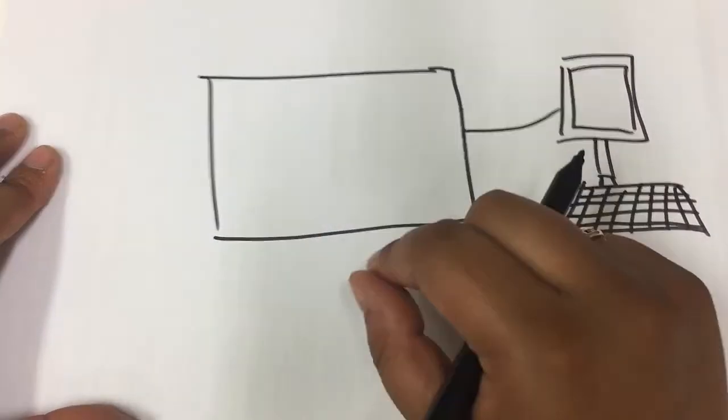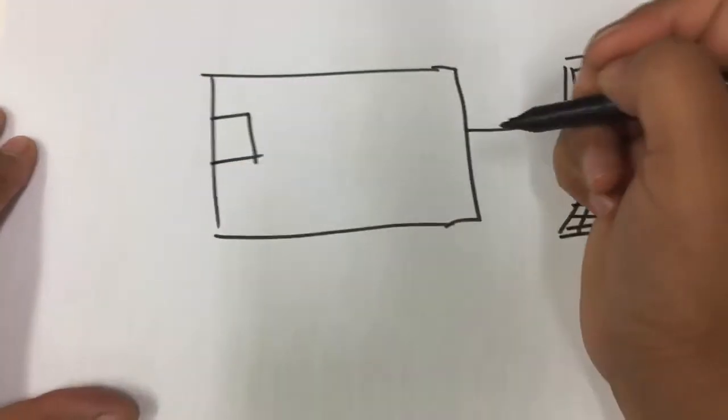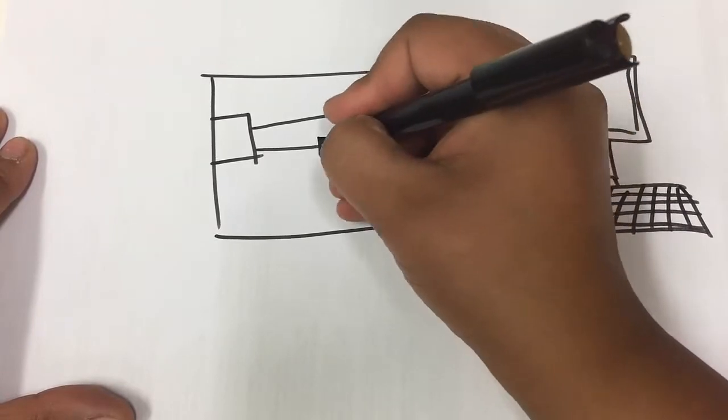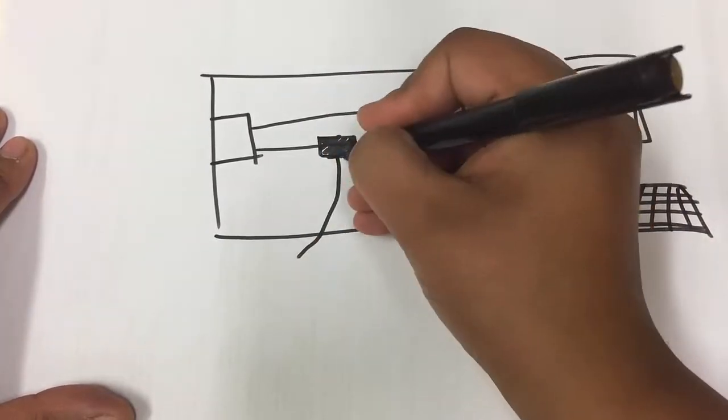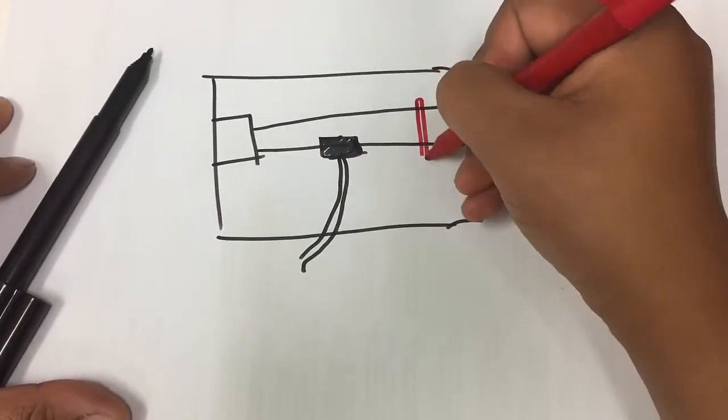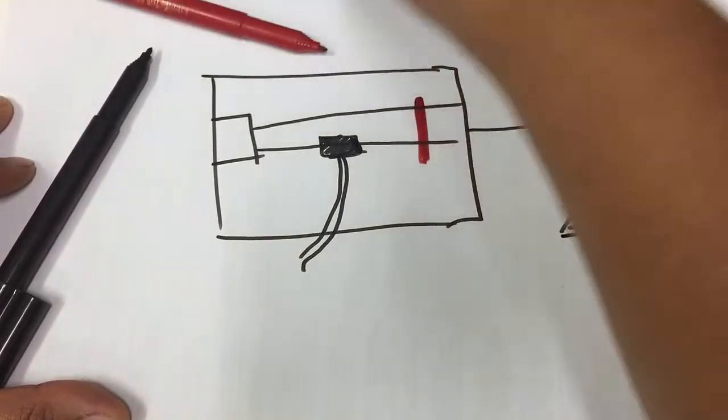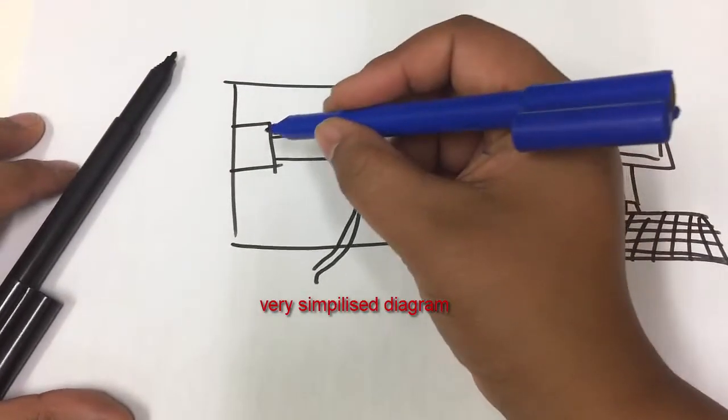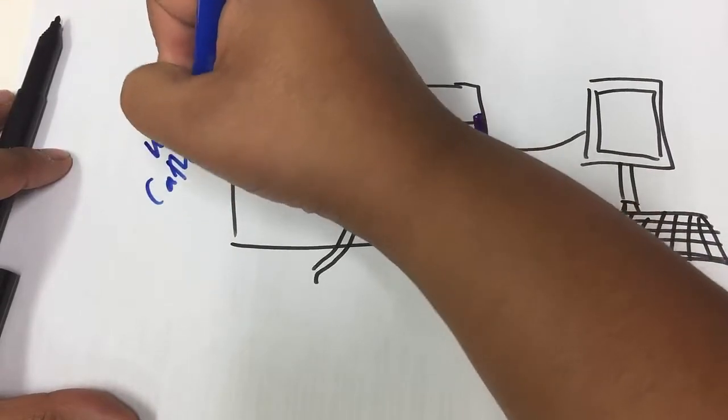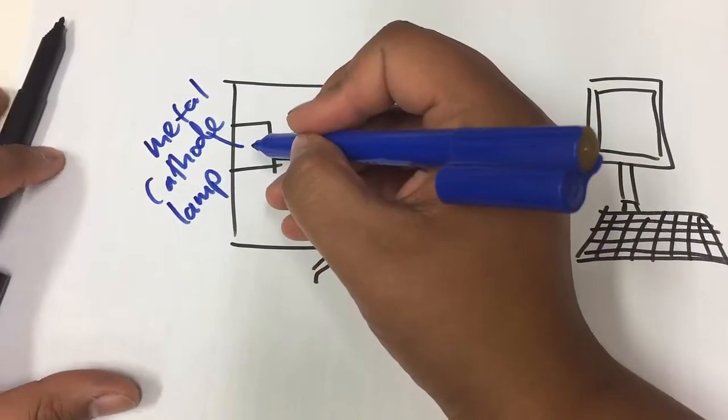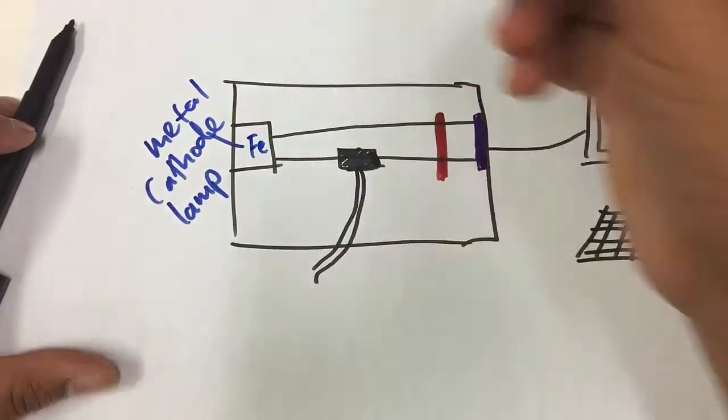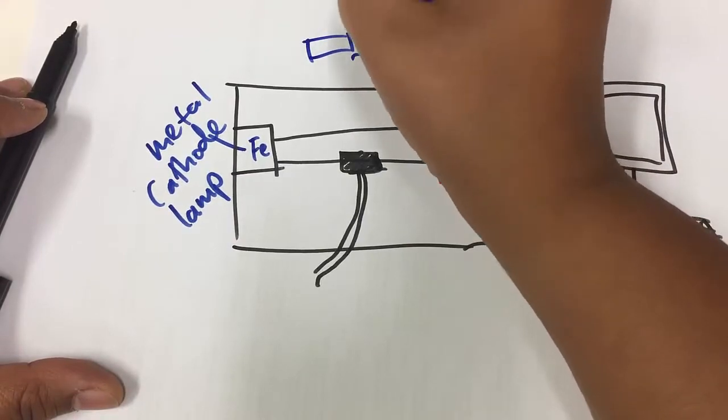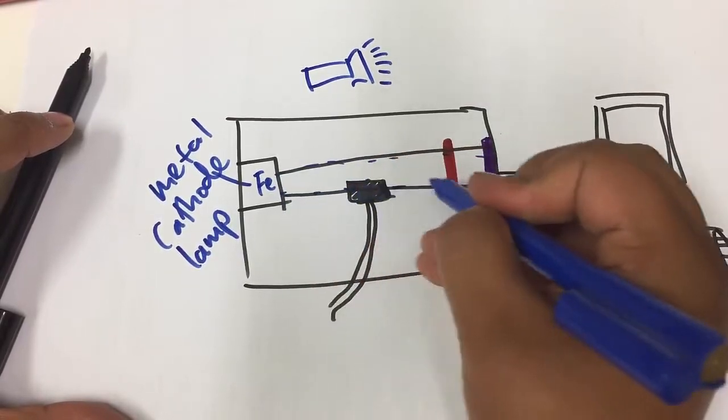So inside this box we have all the components. Inside one part we have a metal cathode lamp. Now that's going to give out a ray of light of some variety. We're going to have our atomizer that's going to be connected to our sample. We also have something called a monochromator. Don't worry about the colors, that's just to show different parts. And also we've got our detector. So we're going to go through the different parts and say what's what and how they work.